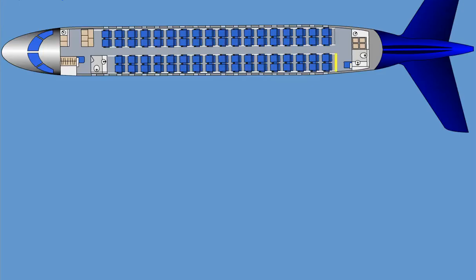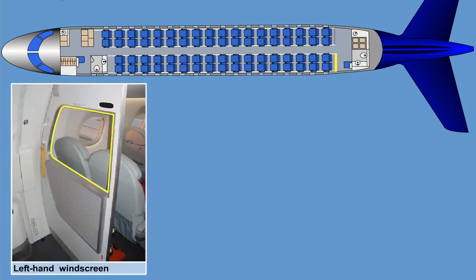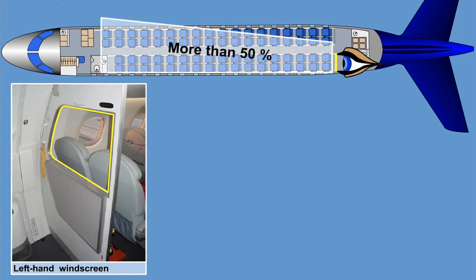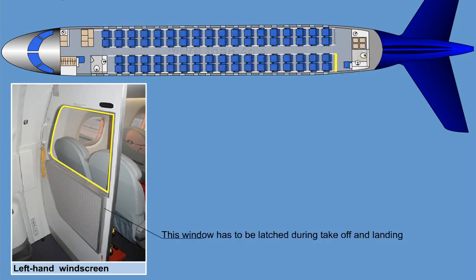A left-hand and right-hand windscreen separate the aft galley area from the cabin. The left-hand windscreen has a large cutout with a drop-down window so that the cabin crew member seated in the forward-facing cabin crew seat is able to see more than 50% of the seated passengers. This window has to be latched during takeoff and landing.